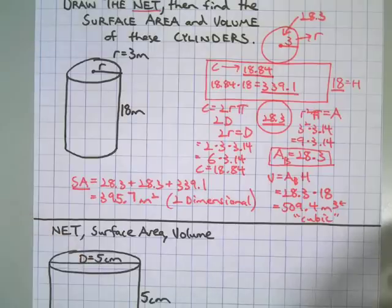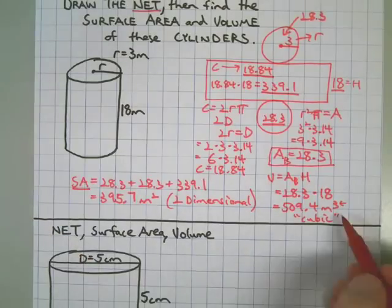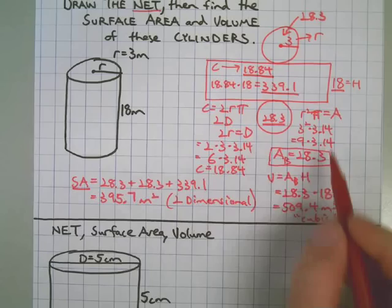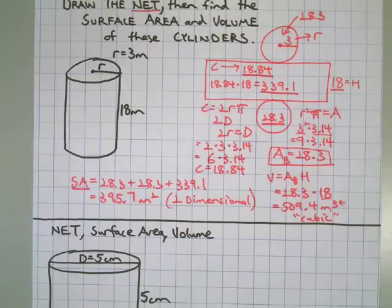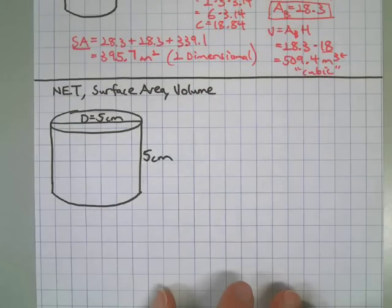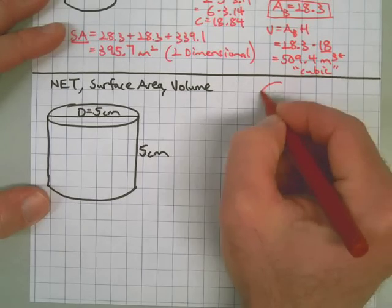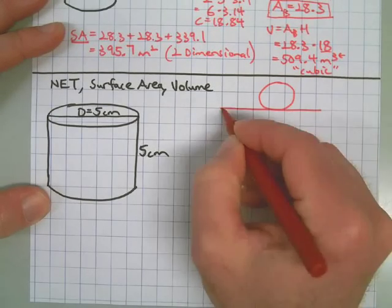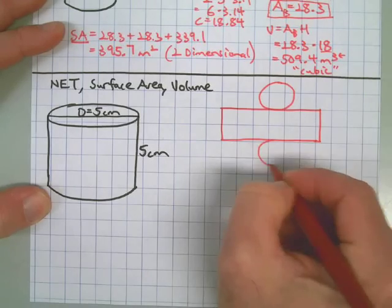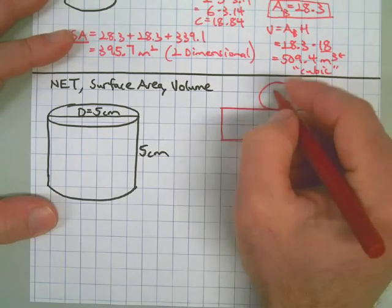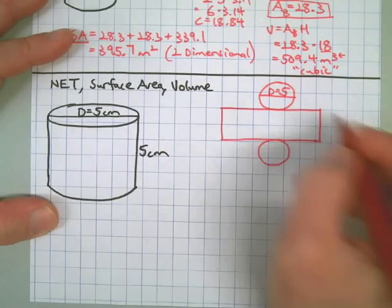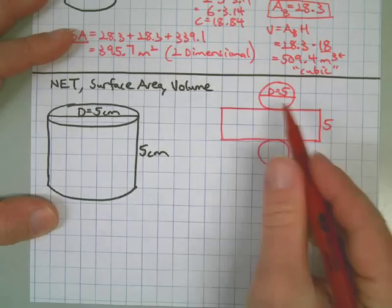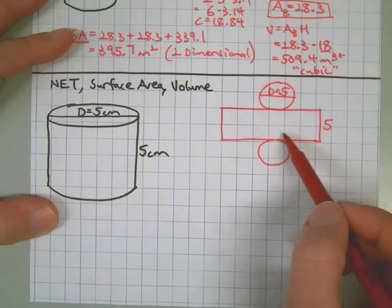The little superscript 2 on square meters means it's two-dimensional — a flat representation of a 3D object. The little superscript 3 on cubic meters means we're talking about a three-dimensional object: for the base area we used two measurements, and the height is the third. We drew the net, got the surface area, and got the volume. Let's go to the next one. The net looks just like the first — that's fine, as long as it has the two bases and a lateral face.